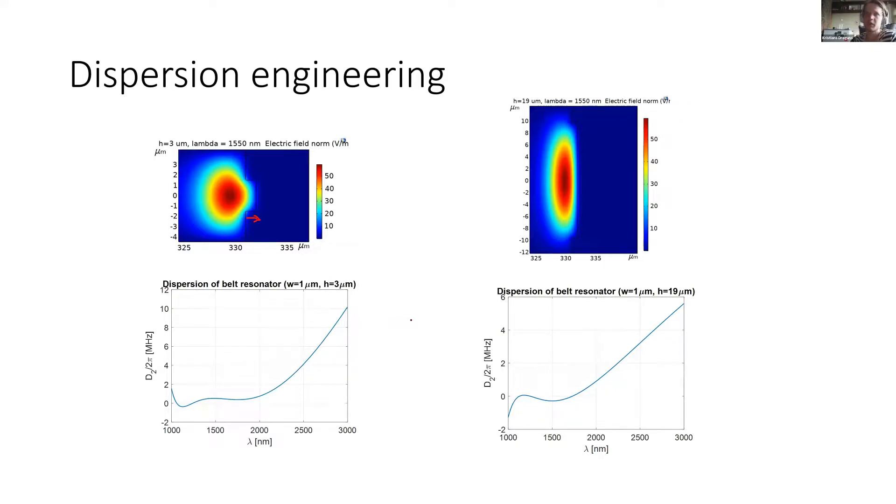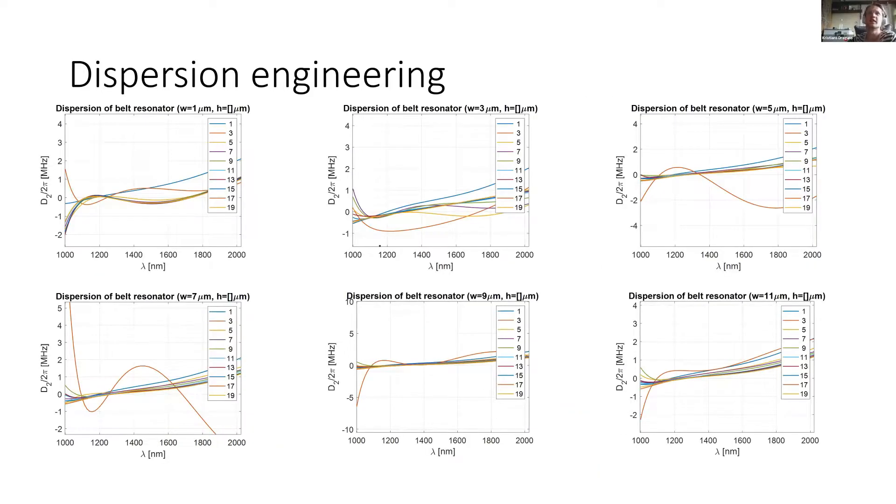By parametric sweep, we just sweep through the parameters and then we can get a lot of dispersion curves and find the one where the dispersion is the best for comb generation. Here we can see that this is quite promising. This would be one micron deep and 13 microns high, this belt.